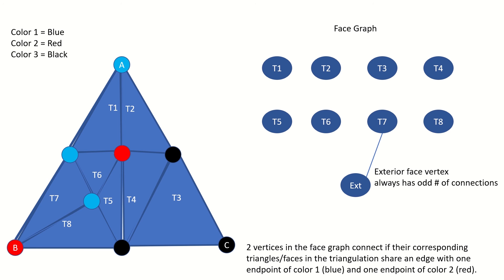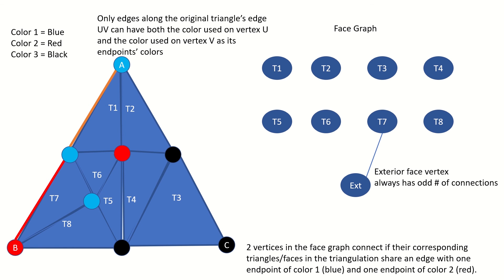And why are there just an odd number of edges on the boundary with endpoints of both colors 1 and 2? Because of the Sperner coloring rules and the 1D case of Sperner's Lemma. Our Sperner coloring rules tell us that any vertices of a triangulation of a triangle that are on an edge of the original triangle would have to be colored with one of the colors used on the endpoints of that edge. Therefore, the only boundary edges that could contain endpoints of both color 1 and color 2 must be those that are subdivisions of edge AB. Or generally, the only boundary edges of a triangulation that contain endpoints of colors 1 and 2 used on vertices U and V of the original triangle must be subdivisions of that edge UV. And by the 1D case of Sperner's Lemma, there must be an odd number of such edges in any triangulation. Therefore, the degree of the face graph vertex corresponding to the external face must be odd.